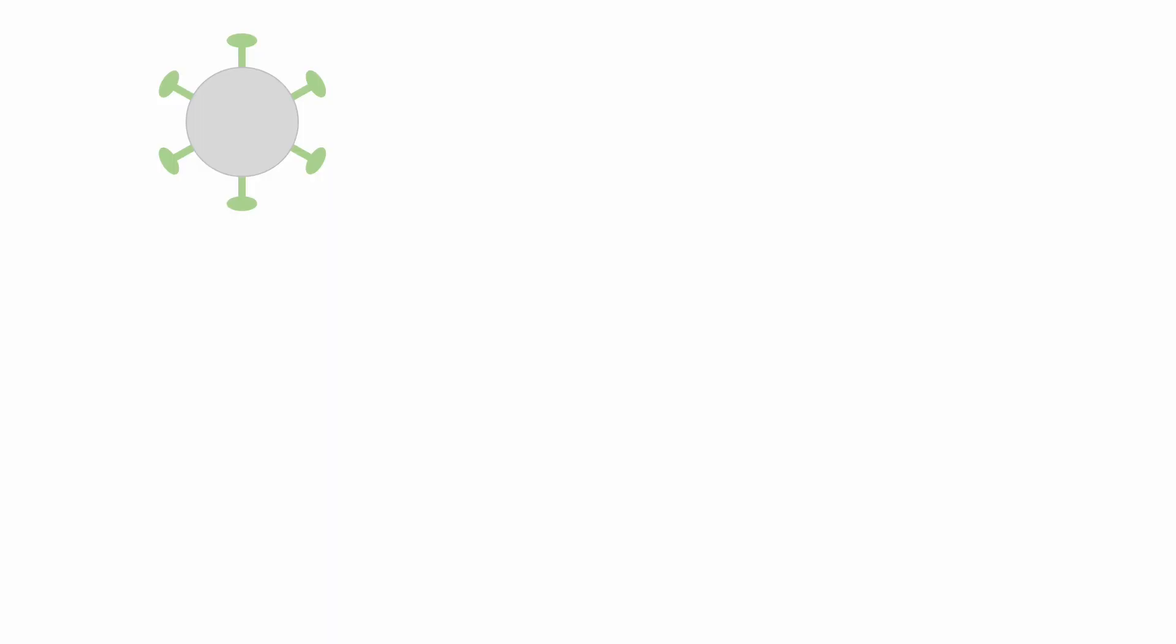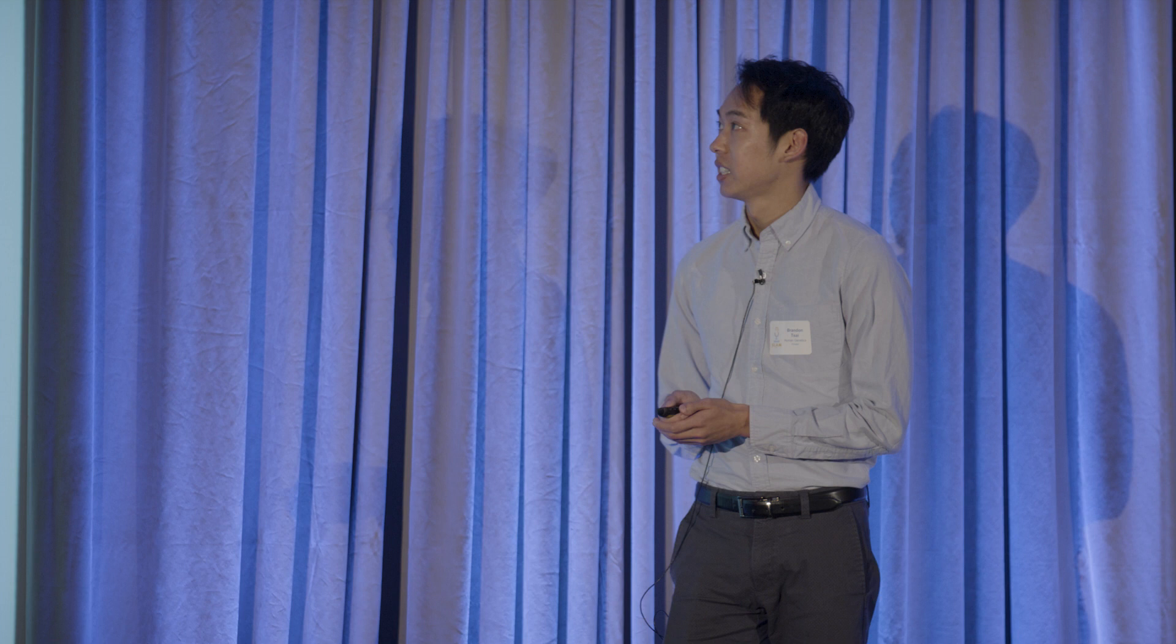To answer this question, let's look at how our current COVID vaccines work. The vaccines expose your body to the spike protein, which is a structure on the outside of the virus, shown in green. This trains your immune system to recognize the virus by generating antibodies against the spike protein.